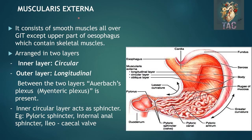Next to the submucosa is the muscularis externa. It consists of smooth muscle cells all over the GI tract but with few exceptions — the upper part of the esophagus contains skeletal muscles. They are arranged as inner circularly arranged fibers and outer longitudinal fibers, and in between these two layers Auerbach's plexus is present. In the case of the stomach, a third layer is present — the obliquely arranged smooth muscle cells. The inner circular layer at most places acts as a sphincter, for example the pyloric sphincter, the internal anal sphincter, and the ileocecal valve.